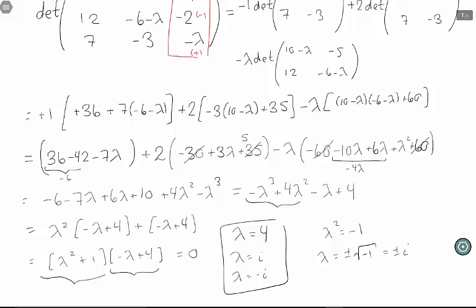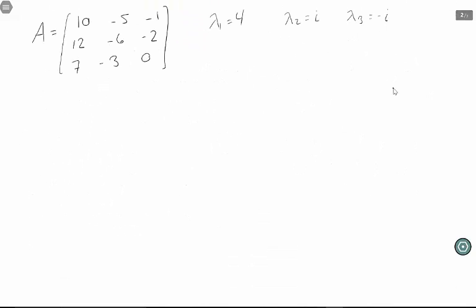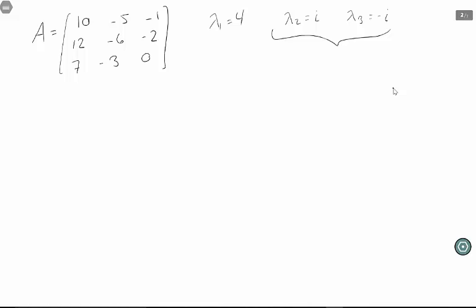So here are my three eigenvalues. Now that I have my eigenvalues, I can find my eigenvectors. Since the second two eigenvalues are complex conjugates of one another, I know the eigenvectors are going to be complex conjugates of one another, so I really only need to find what's going on with that second eigenvalue. Let's start with the first one.